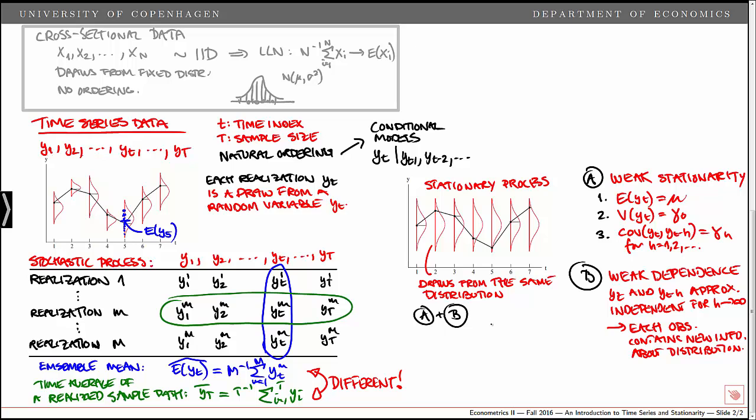Under weak stationarity and weak dependence, the sample average, which we have down here, the average of the sample path, will actually converge to the unconditional expectation of Yt, the mean of the process.